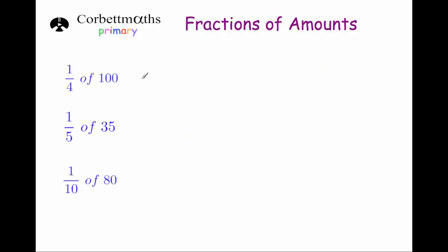So if you wanted to work out a quarter of something, we're just going to divide by 4. So a quarter of 100 — we could half it and half it again to get 25, or we could do 100 divided by 4 using the bus shelter method. 4 into 1 doesn't go, remainder 1. 4 into 10 goes twice, remainder 2. And 4 into 20 goes 5 times. So a quarter of 100 is 25. To get a quarter of something, you just divide it by 4.